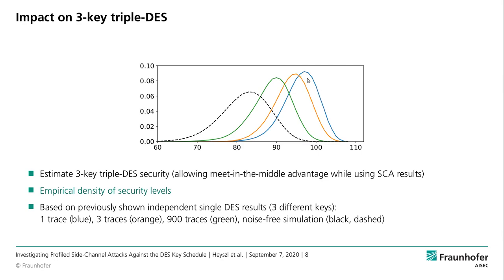On the x-axis we have security levels and on the y-axis the empirical density. We see four different graphs: the blue graph is derived from single-trace results and, as expected, shows the highest security levels. The attacker gains when increasing the number of attack traces — with three traces it is the orange density, and with 900 traces it is the green density. Increasing the number of traces moves the distributions to the left, meaning more keys have lower security levels.